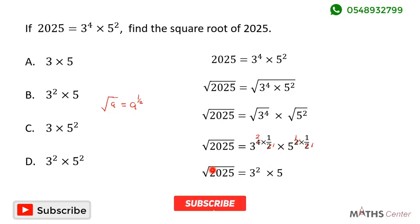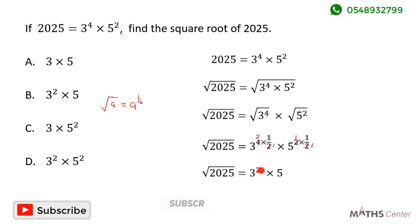So the square root of 2025 is equal to 3 exponent 2 times 5. When we look through the options, we can see that the correct option is B.